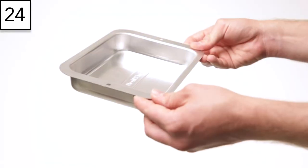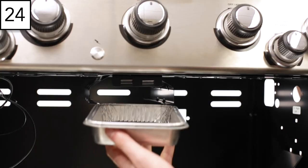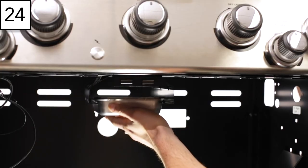Step 24. Attach the grease cup onto the grease tray assembly and slide it into place on the grease tray bracket.